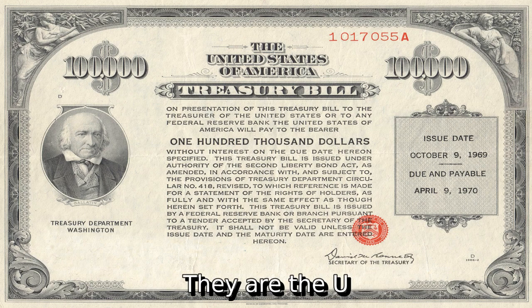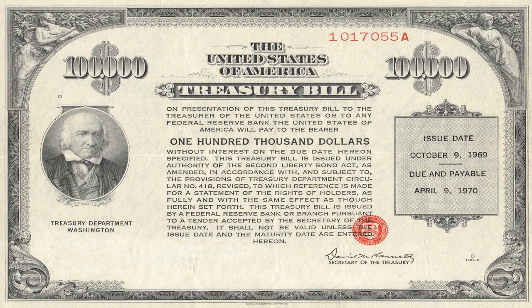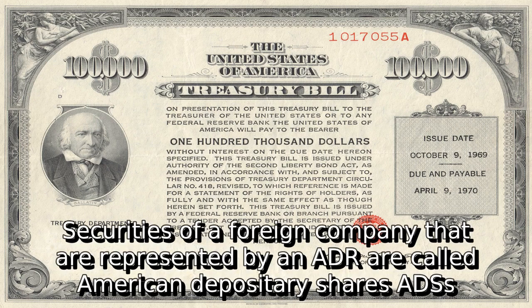They are the U.S. equivalent of a Global Depository Receipt (GDR). Securities of a foreign company that are represented by an ADR are called American Depository Shares (ADSs).